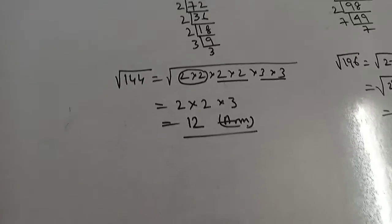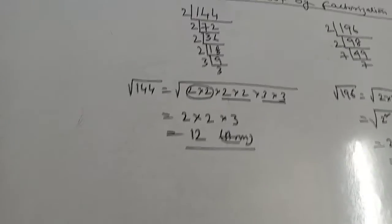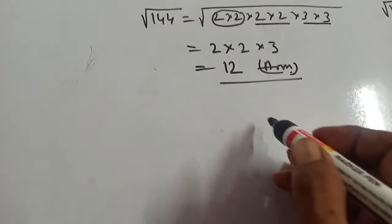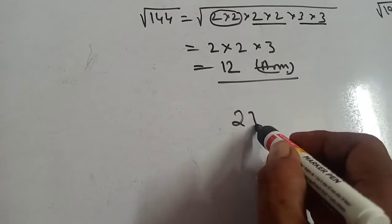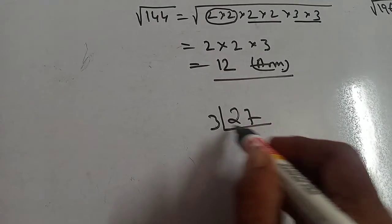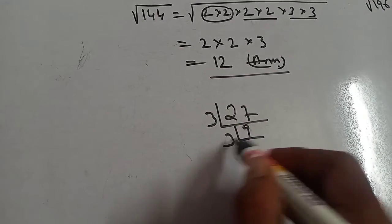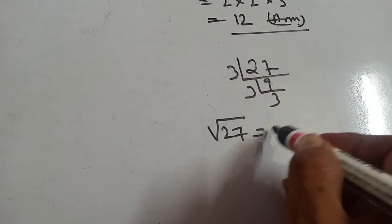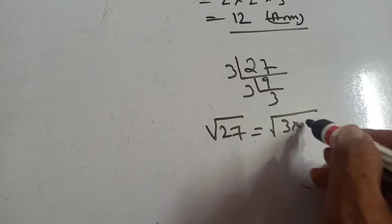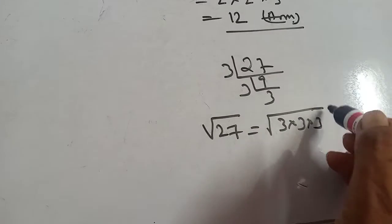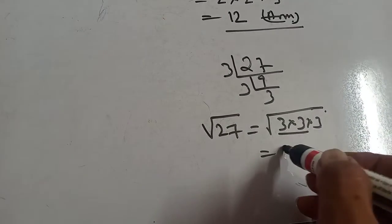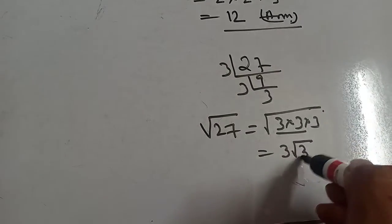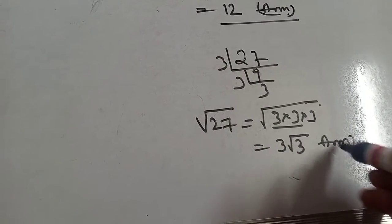Like this way the result will come. Now 27. Square will be 3, 9, 3, 3. Then root over 27 equals root over 3×3×3. This one 3 will come, and this is not pair, so it will remain in roots. 3√3 is the answer.